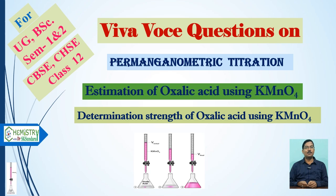Welcome to this channel, Chemistry with Dr. S.K. Sundar Rai. Today we will discuss five questions on permanganometric titrations. In these titrations, we can estimate the amount of oxalic acid using KMnO4, which is included in the UG course. Another topic is the determination of strength of oxalic acid using potassium permanganate, also included in CBSE or CHSE Class 12. So let's start.